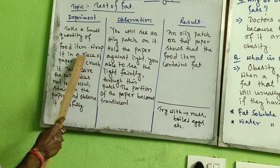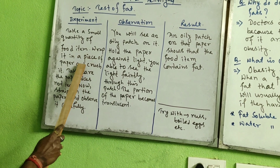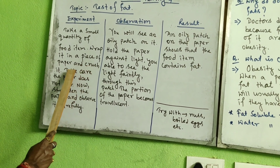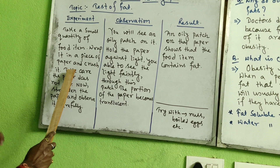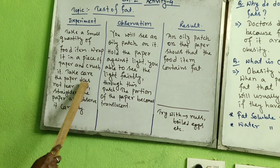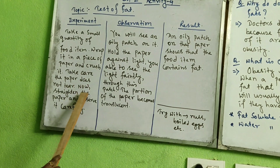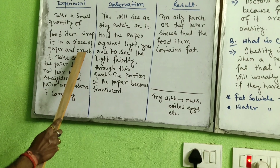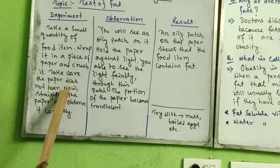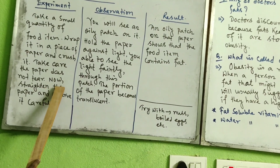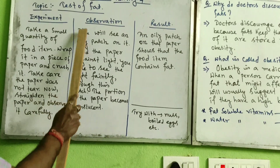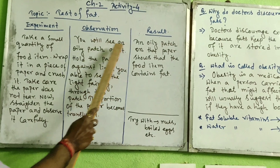After taking the food item, wrap it in a piece of paper and crush it properly with something. While you crush it, take care that the paper does not tear. After crushing, straighten the paper.